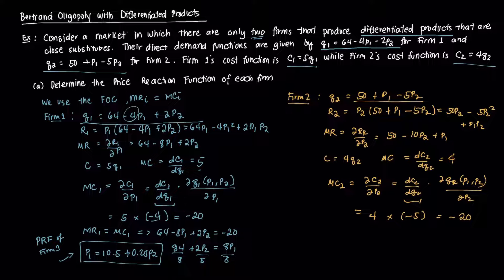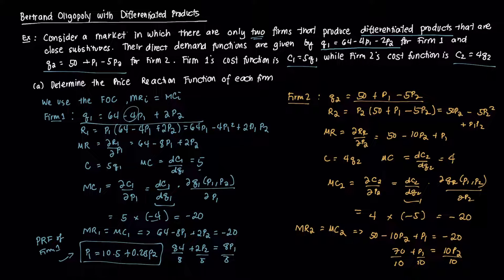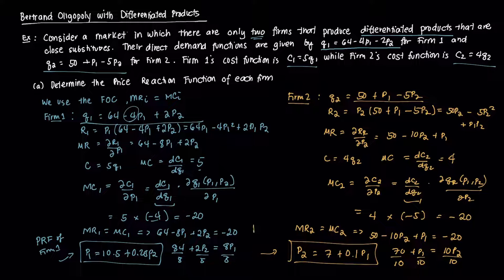Setting MR2 = MC2: 50 − 10P2 + P1 = −20. Isolating P2: 10P2 = 70 + P1, so dividing by 10 gives P2 = 7 + 0.1P1. This is the price reaction function of firm 2.